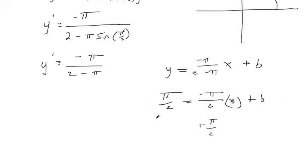So you'd add pi over 2 to both sides. I mean, sorry, you're trying to get b by itself. So you add pi over 2 to both sides. So half a pi plus half a pi makes a whole pi. So that would be our y-intercept. And that's what you'd plug in here, okay?